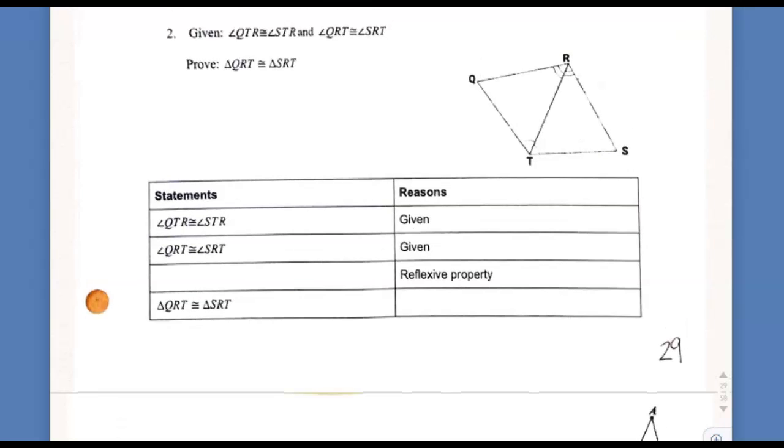And the bottom one, we have this given information. QTR, which is this angle, is congruent to STR, which is this angle. And then we have QRT, which is this angle, is congruent to angle SRT, which is this angle. So now we already had those written in as givens for us, and the reason was given. Now that's all they gave us for given information, and we're asked to prove this final line: two triangles are congruent.